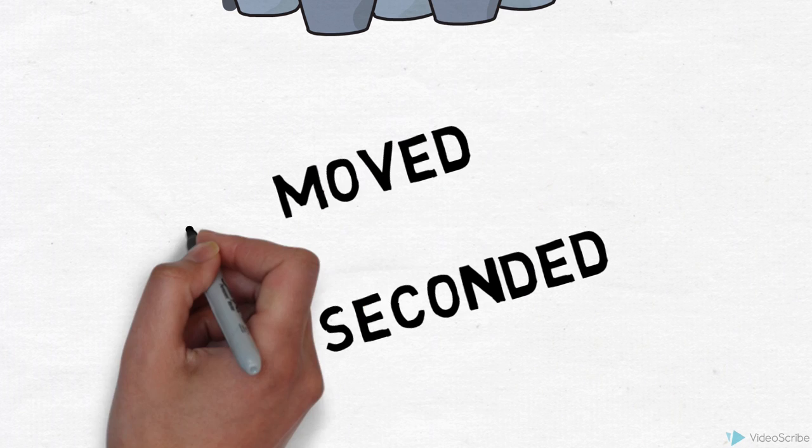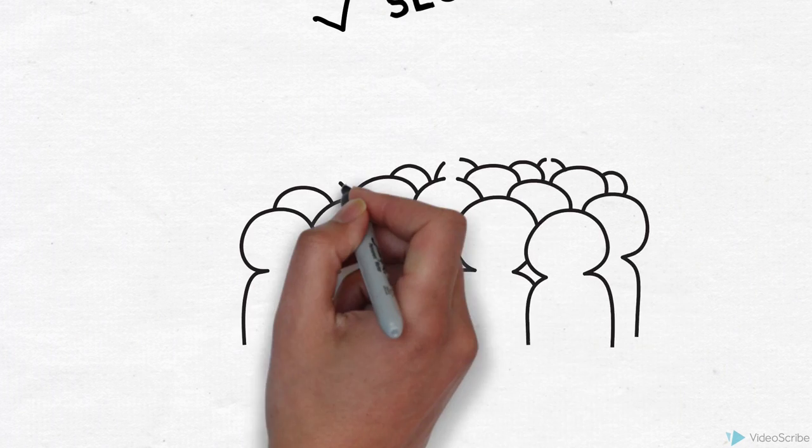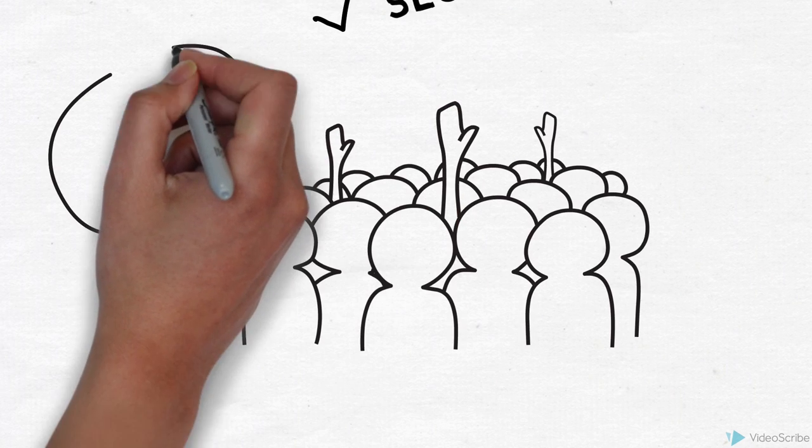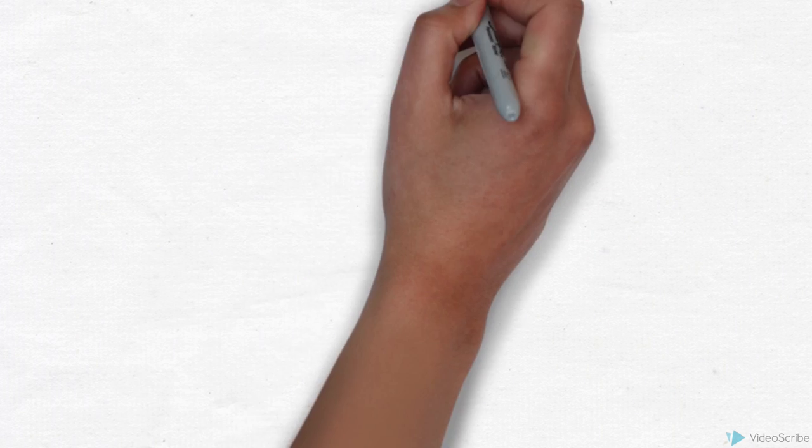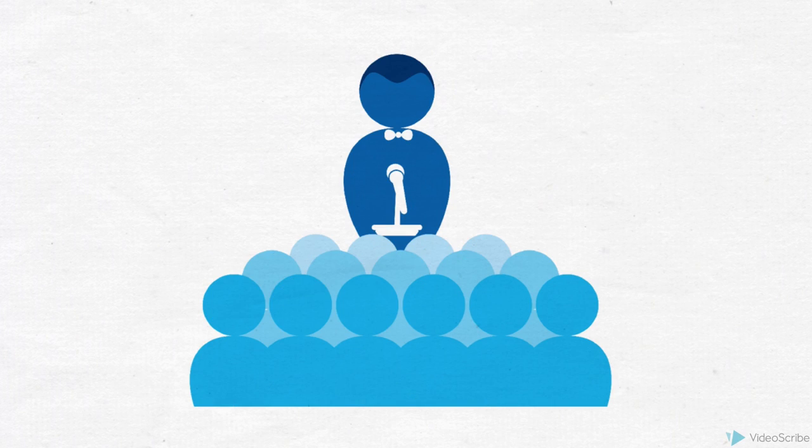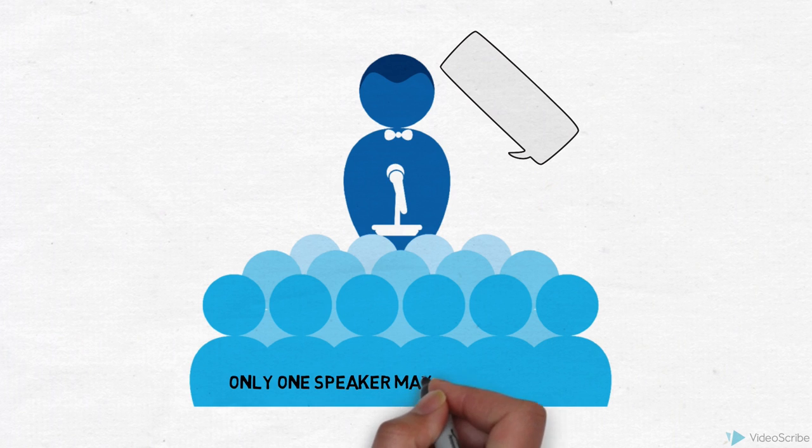If your motion has been moved and seconded, it is placed before members for consideration and debate. The mover is always allowed to speak first and is given the opportunity to justify their motion. During discussion, only one speaker may speak at a time.